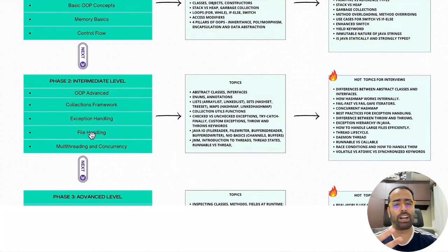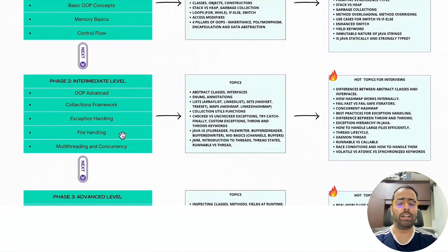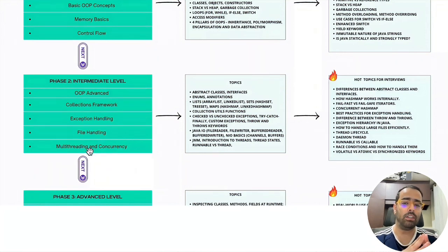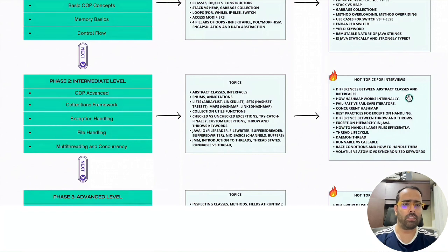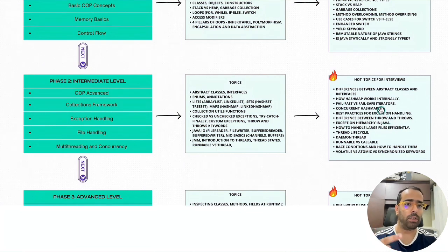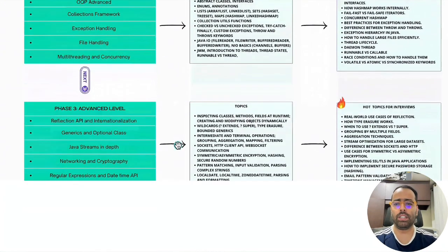You should also be aware of file handling since most projects deal with reading and writing files. Learn Java IO API, NIO basics, BufferedReader, BufferedWriter, and how to handle large files efficiently. Then there is multi-threading and concurrency, a really hot interview topic — covering the Java memory model, daemon threads, thread life cycle, race conditions, the volatile keyword, atomic types, how HashMap works internally, fail-fast versus fail-safe iterators, and ConcurrentHashMap.